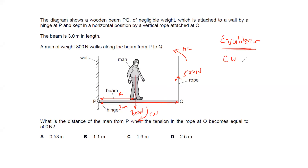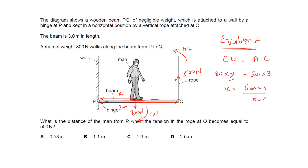The clockwise moment equals the anticlockwise moment. Clockwise: 800 multiplied by x (unknown distance from pivot). Anticlockwise: 500 multiplied by 3 (total length of beam). So x = 500 × 3 ÷ 800 = 1.875, which is approximately equal to 1.9. That is why C is the correct answer.